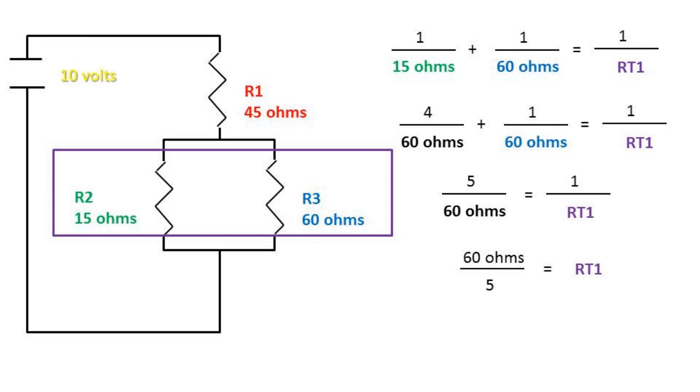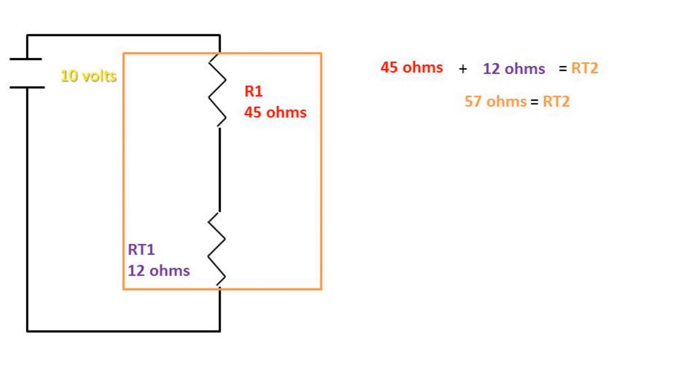After further rearranging the formula, we get 60 ohms over five equals resistance total one. Simplifying this, we get resistance total one to be equal to 12 ohms.